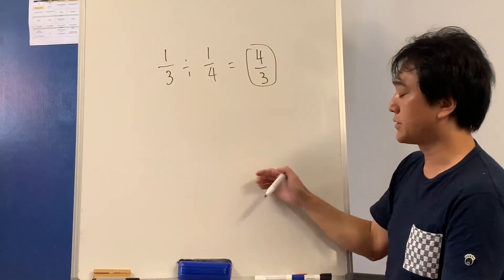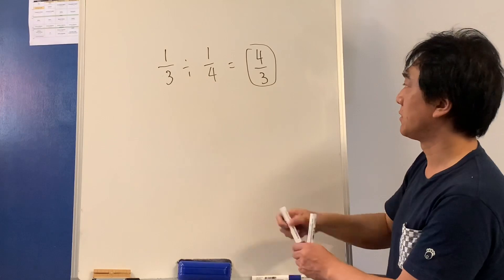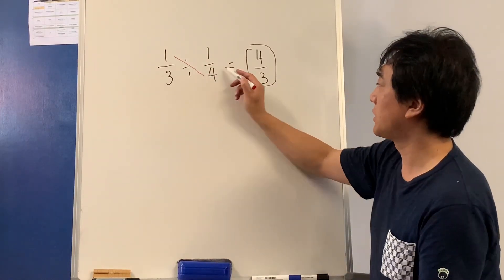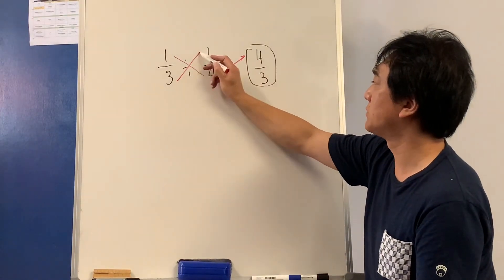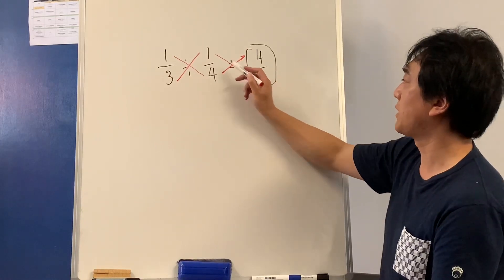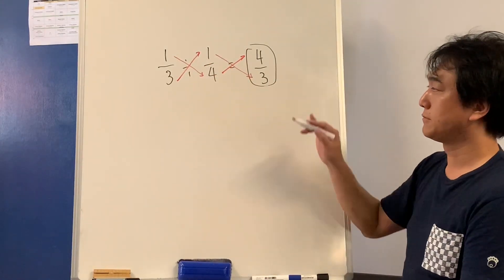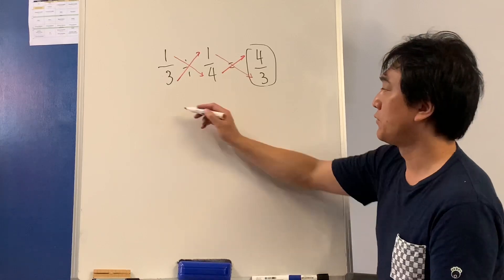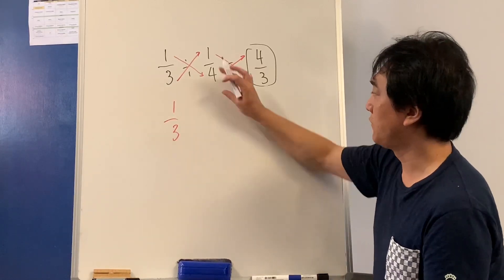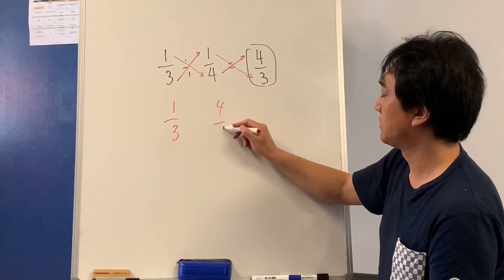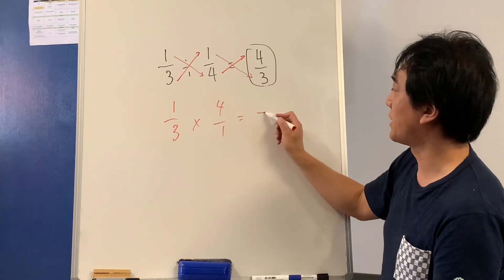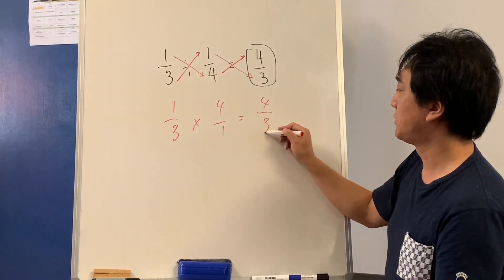By repeating this process, kids may be able to find one times four is four, three times one is three. So if we flip this, we simply multiply the numbers to get the answer.